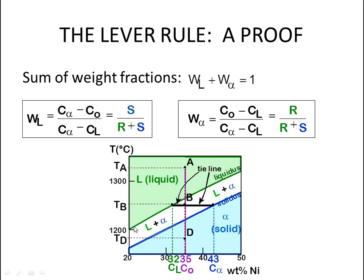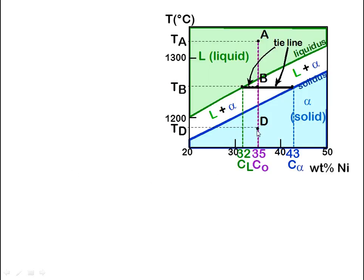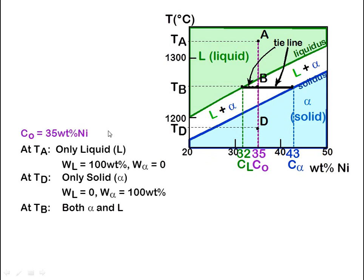Looking at the nickel diagram again: the liquidus and solidus lines are shown, with liquid solution above, solid solution below, and liquid plus solid between the two lines. The weight percentage of nickel increases from left to right — 20% on the left side and 50% on the right. Points Ta, Tb, and Td are marked. We are given a starting composition of 35 weight percent nickel, from which we draw a vertical line.